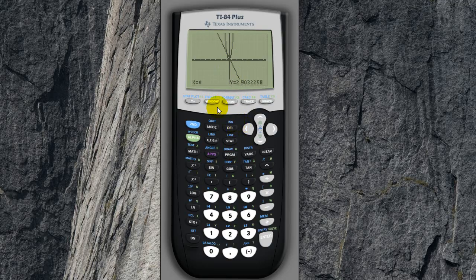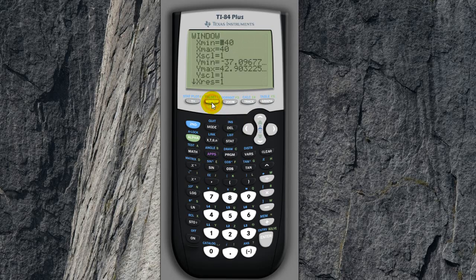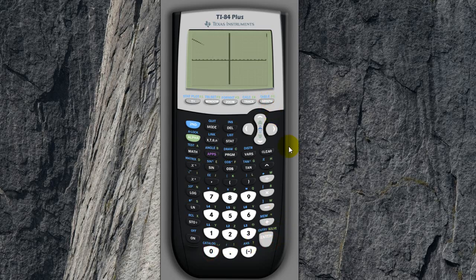So again, I'm going to change the viewing window a little bit. So let's go window, let's change X min and X max to negative 10 and positive 10. And let's see what happens. So yeah, that should make it a bit easier to see.